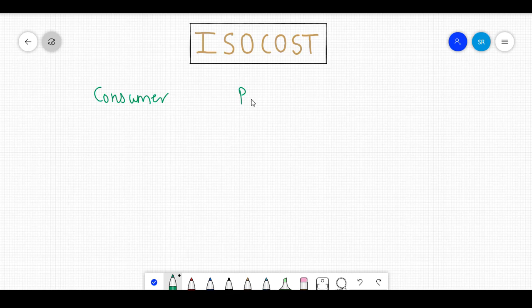The first being the consumer, the second the producer, and the third the government. The ISO cost showcases the budget constraint that the producer faces.